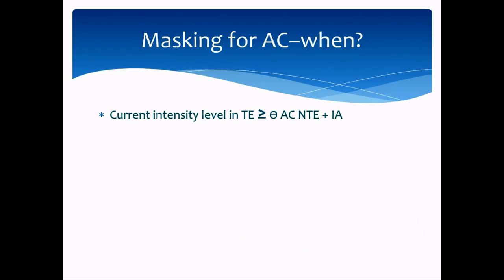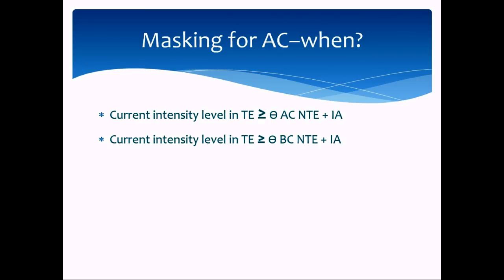For air conduction, we need to mask when the current intensity level in the test ear is greater than or equal to the air conduction threshold in the non-test ear at the same frequency plus inter-aural attenuation, because that means the signal in the test ear could be crossing over — it's equal to what could cross over, and therefore we can't rule crossover out.